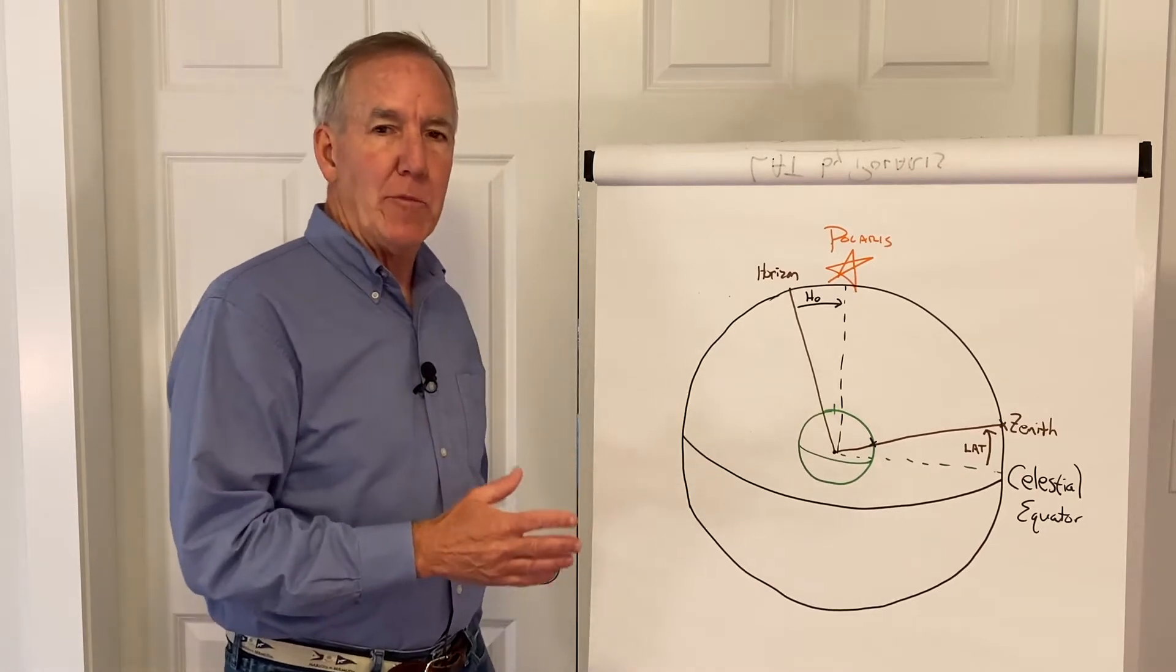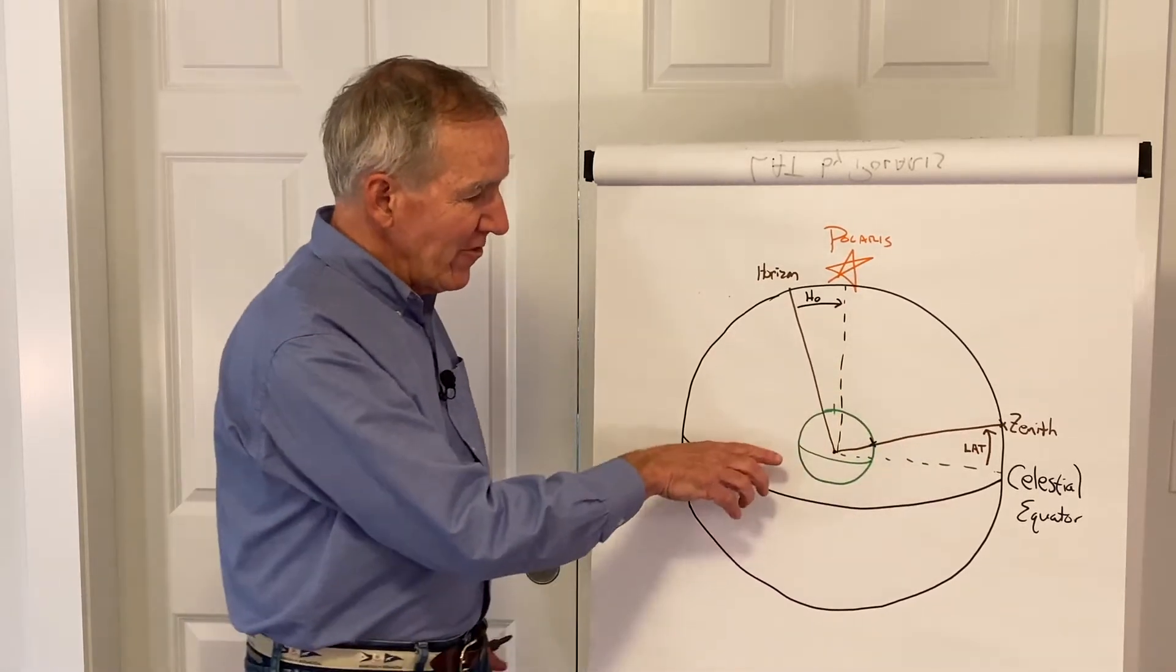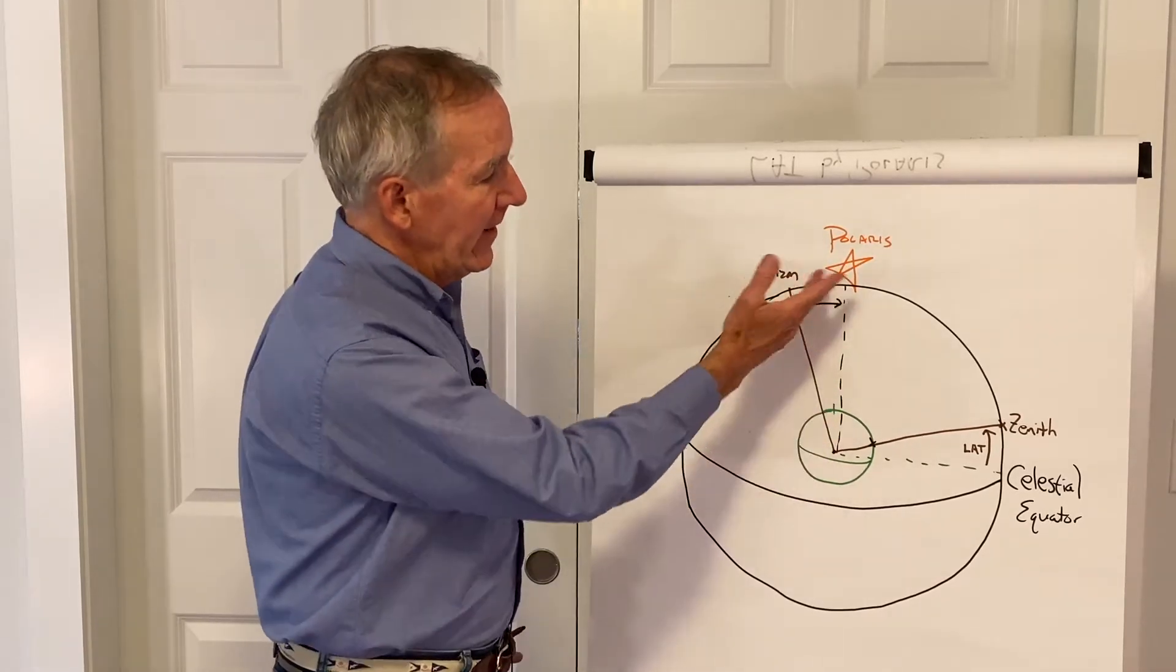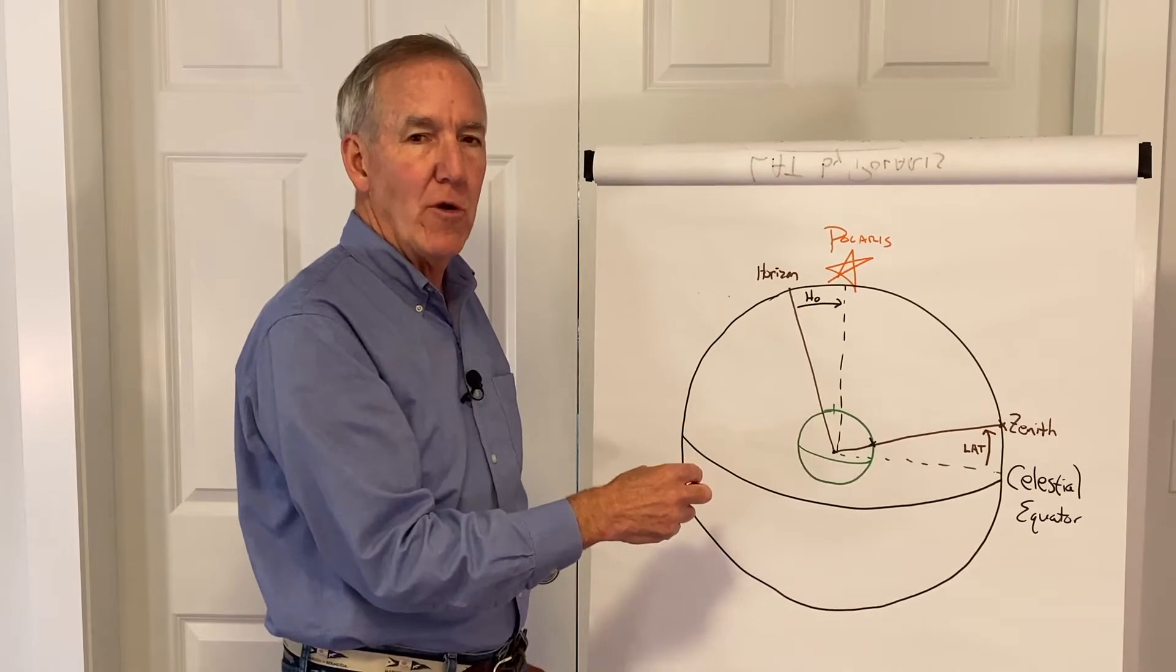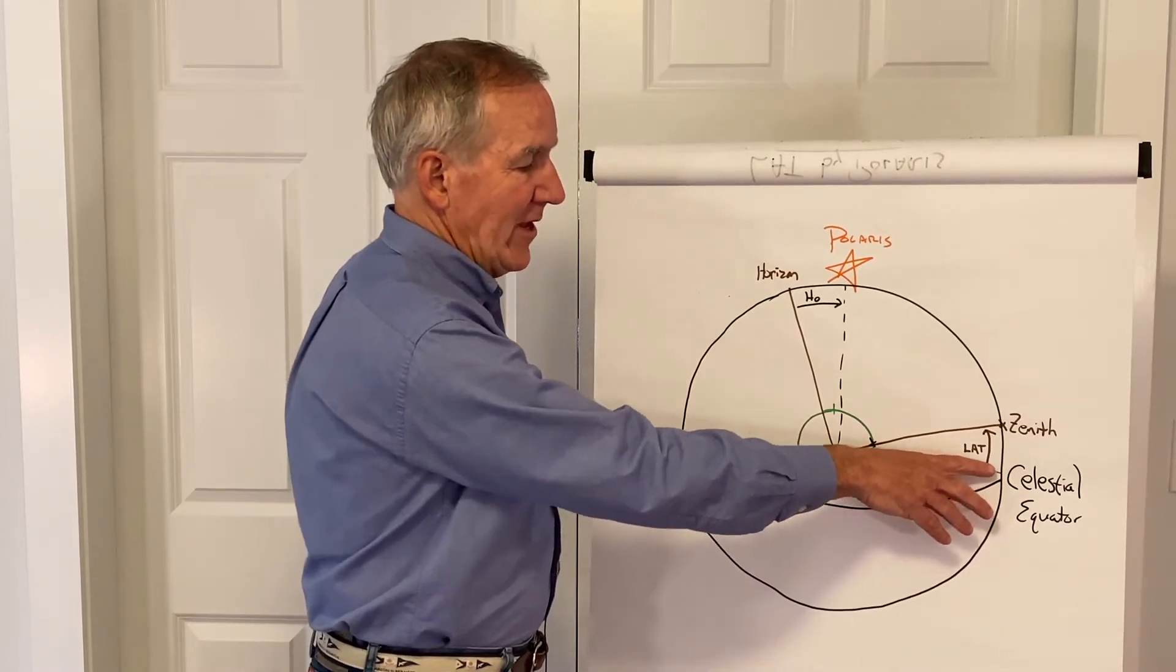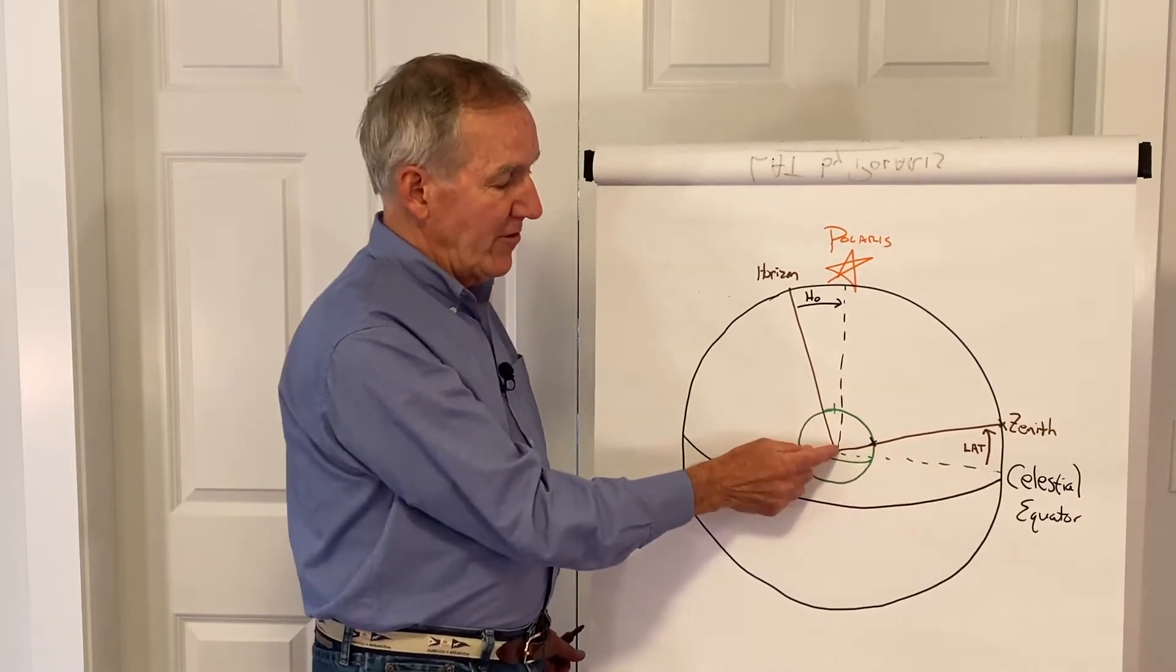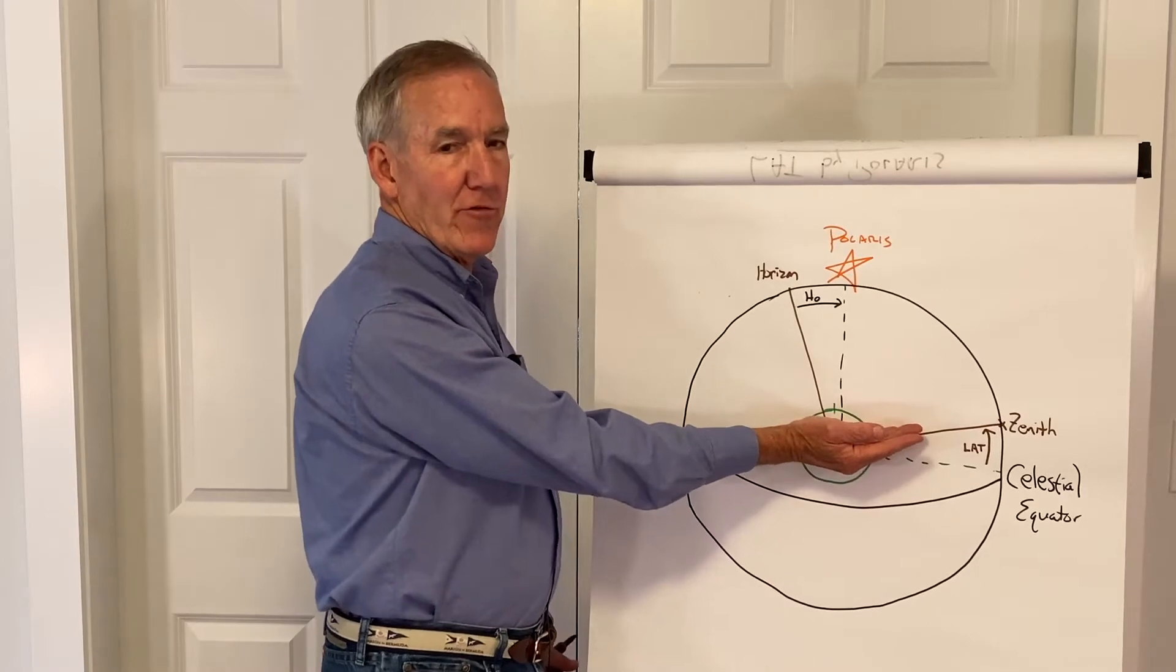So here's the basic diagram to explain how this works. We're back to our Earth here and our celestial sphere. We've projected the celestial equator out, and here's the North Star Polaris sitting right over the North Celestial Pole, which is a projection of the North Pole. We know latitude, if we're out here on the surface of the Earth, latitude is defined as that angle from the center of the Earth up to our position. From the equator up to our position would be our latitude.